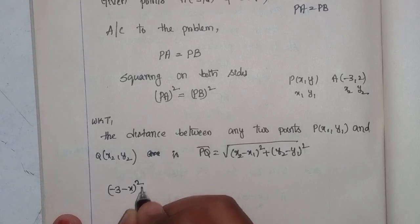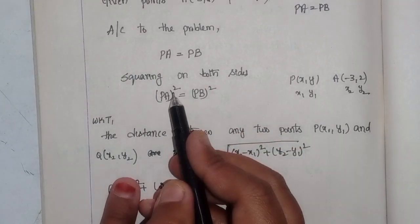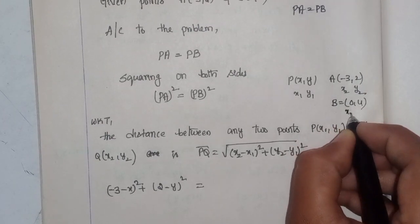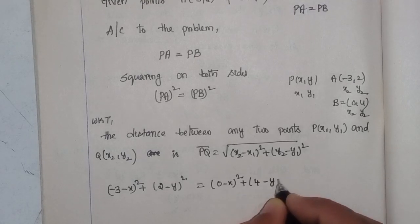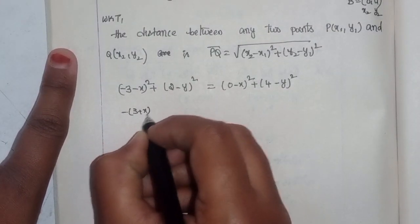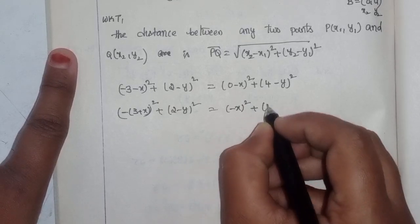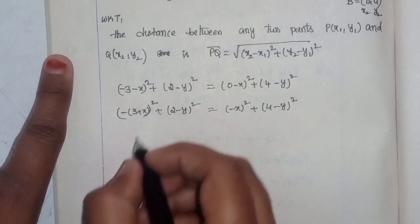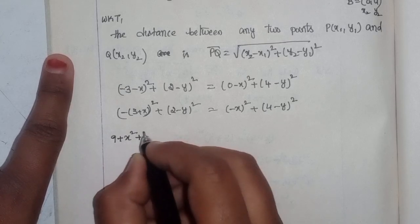Substituting into PA² = PB²: since we squared, the square root is cancelled. For point B(0, 4), this is (x₂, y₂). Expanding: (x - (-3))² + (2 - y)² equals (x - 0)² + (4 - y)². Simplifying: (3 + x)² + (2 - y)² equals x² + (4 - y)².